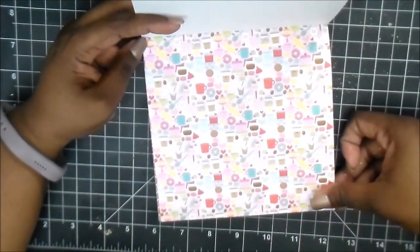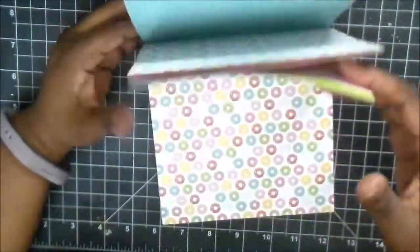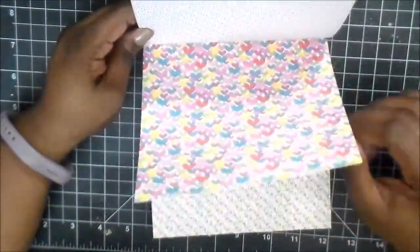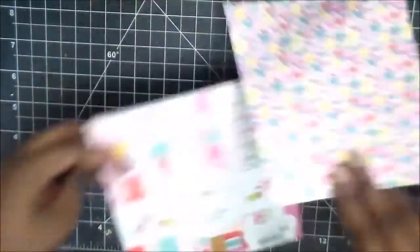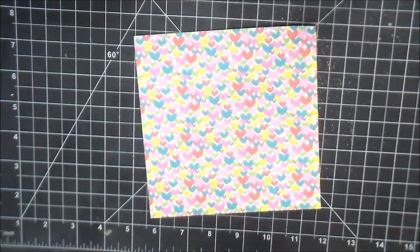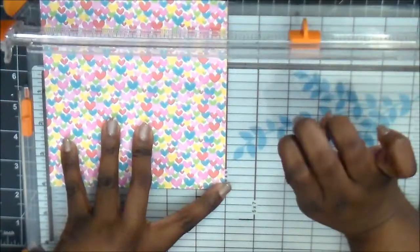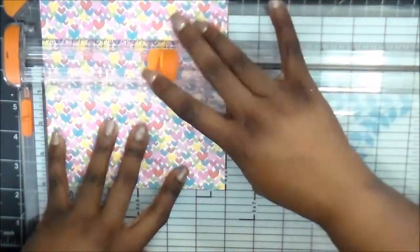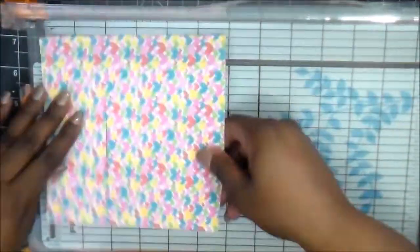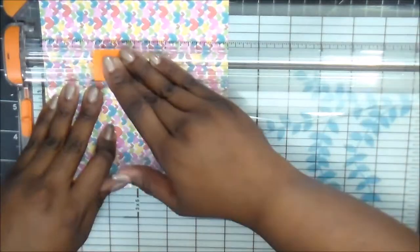So in picking out the 6x6 paper, I decided to use the hearts. Now on parts of what we're cutting out, the hearts are sometimes going in a different direction. They're not all going vertical,